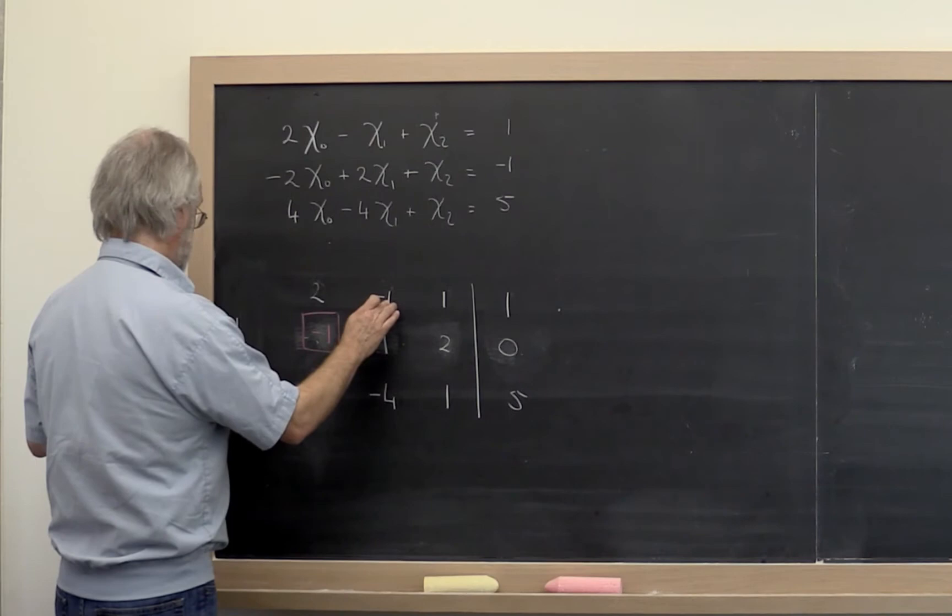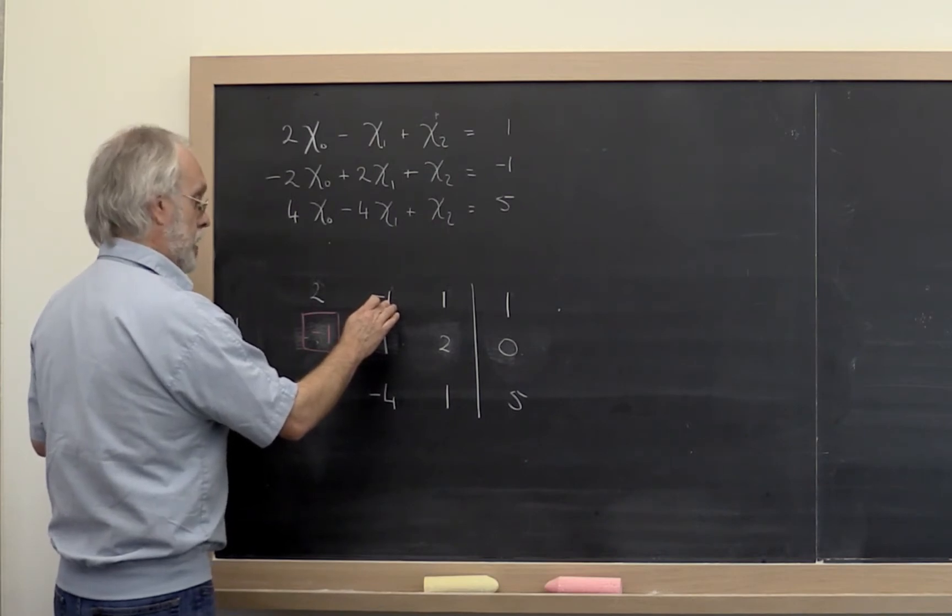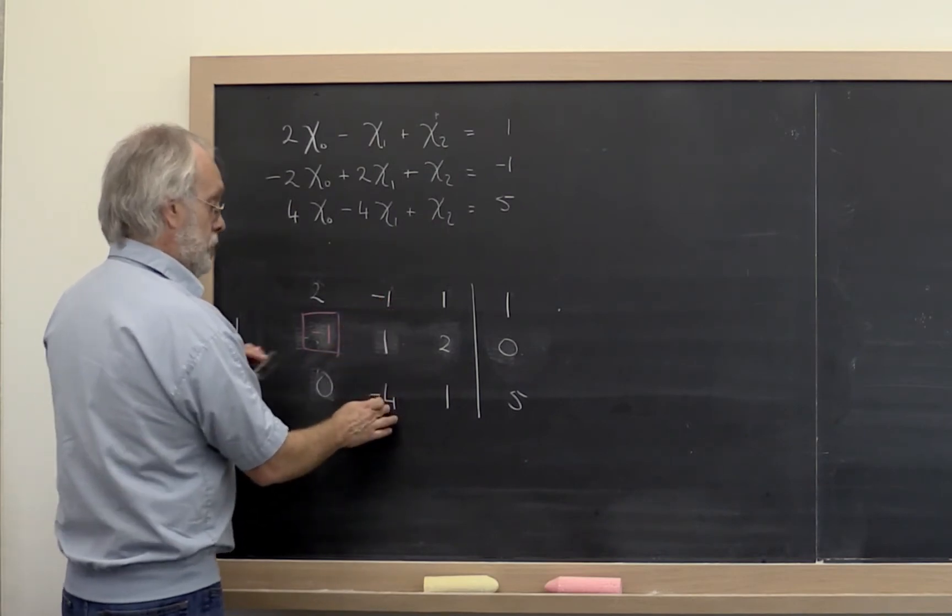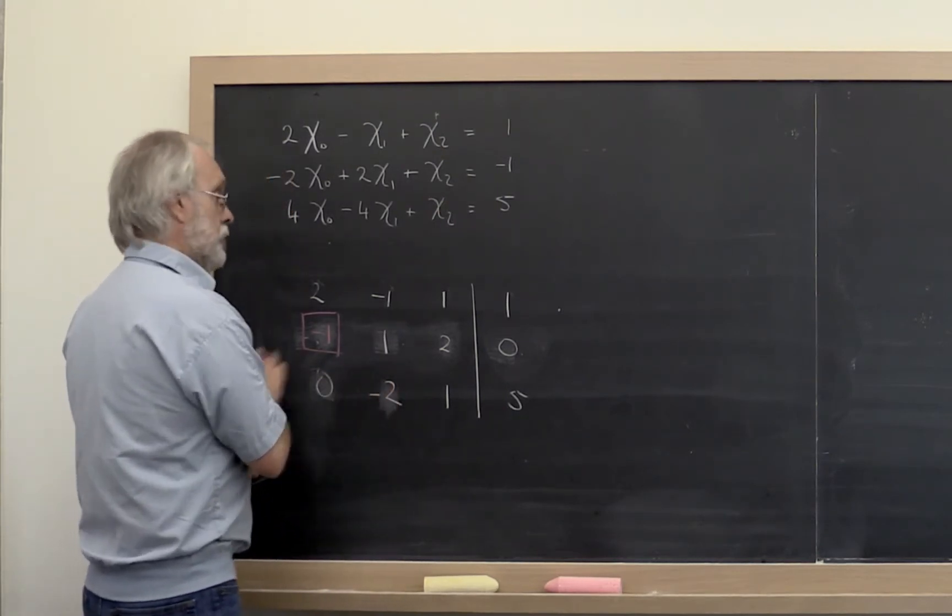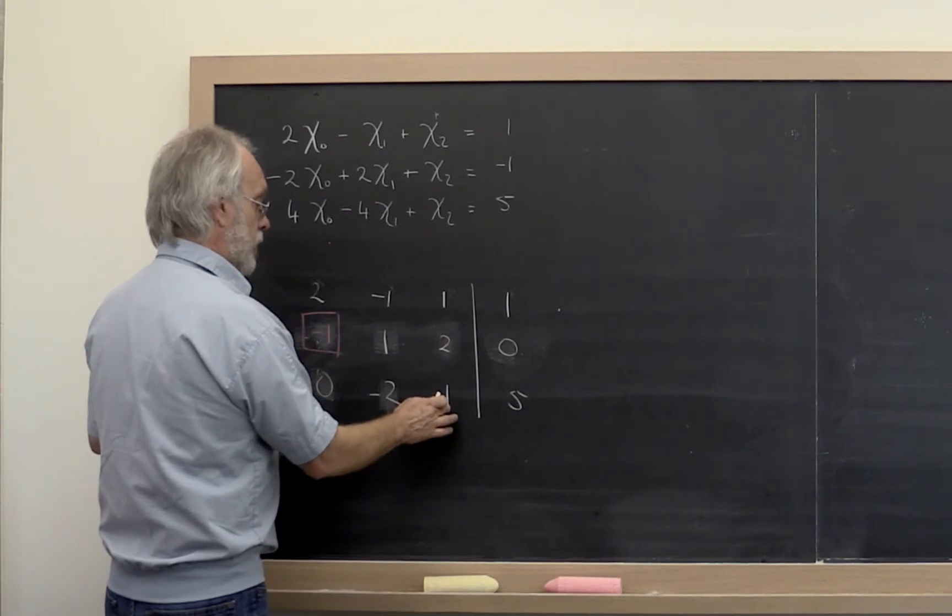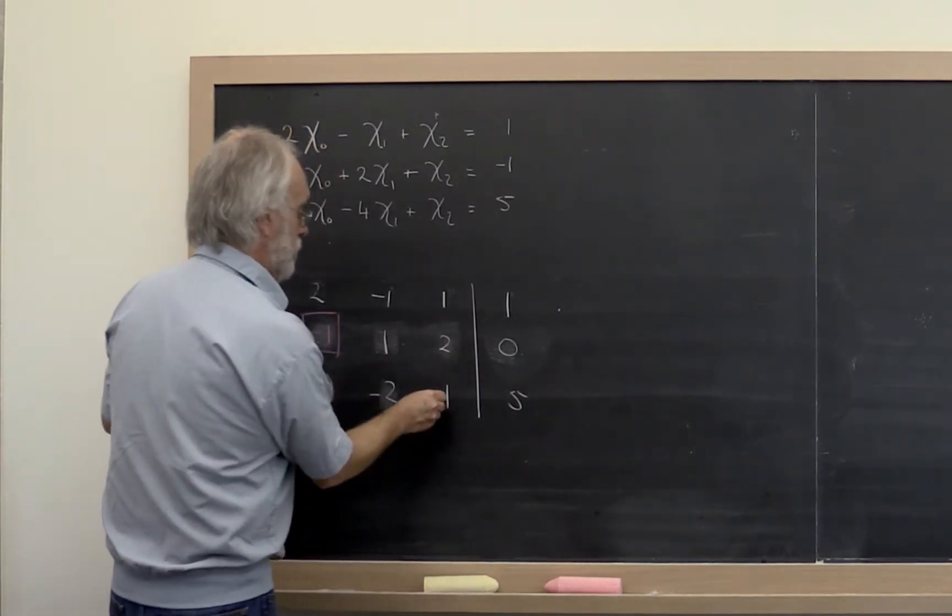If you do 2 times minus 2, that's minus 2, which means you need to add 2 to this. So this becomes a minus 2. Then you need to do 2 times 1, subtract off of 1, so that makes this into a minus 1.